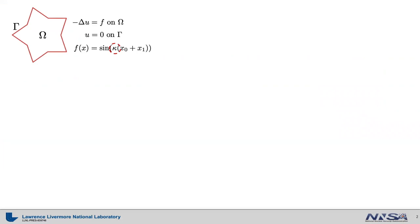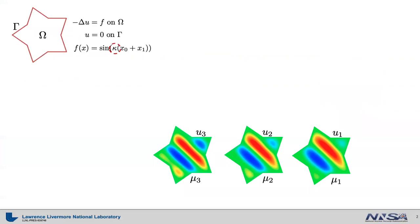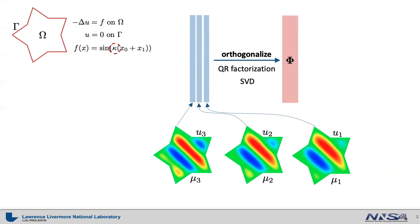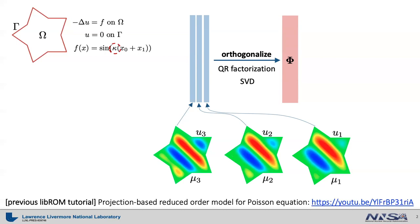In the previous Libram tutorial, we built a specific parametric reduced order model. We collected all the simulation data for many different training points for a Poisson problem, put them together in a single matrix, and applied orthogonalization by either QR factorization or singular value decomposition. The resultant basis theta was then used to predict the solution for a new point within a parameter space between pi and 1.2 pi. Please check out this previous Libram tutorial for a recap.